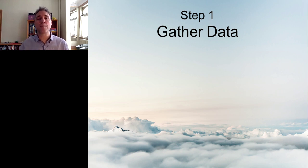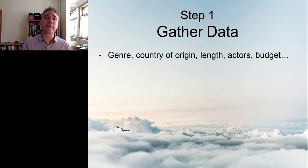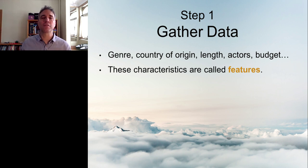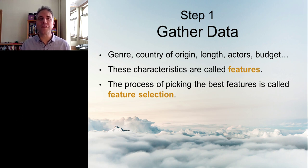The first part of that process is gathering data. In our video streaming example, some of that data might include the genre of the movie, the country of origin, how long the movie is, the particular actors, how much it cost to develop — is it a high-budget or low-budget movie? We refer to these characteristics as features. There's a large number of features you could consider using, and you want to use the best ones. The process of picking the ones most highly correlated with the target — the question you want to answer — is called feature selection.